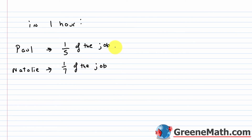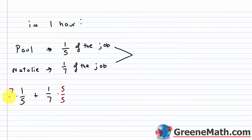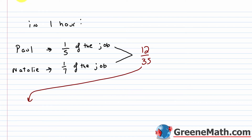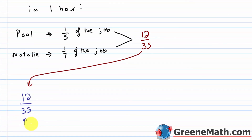I want to sum the individual contributions from both people to get the amount of the job completed together in one hour. One-fifth plus one-seventh: getting a common denominator gives 7 over 35 plus 5 over 35, which equals 12 over 35. So 12/35 is the amount of the job completed in one hour working together.